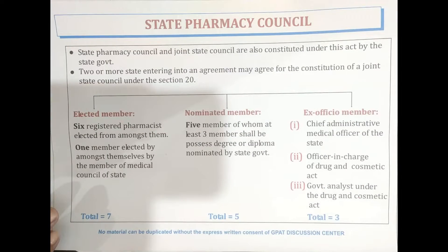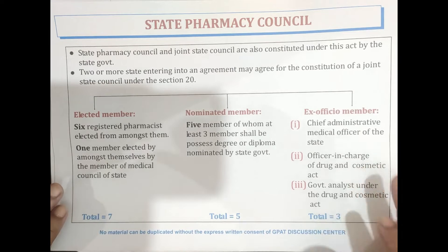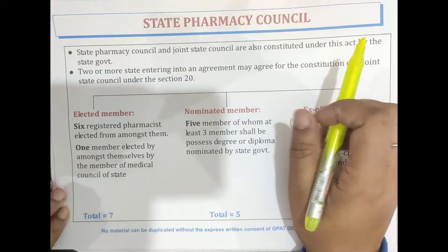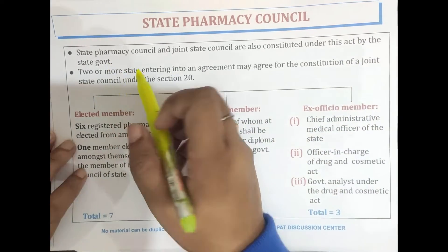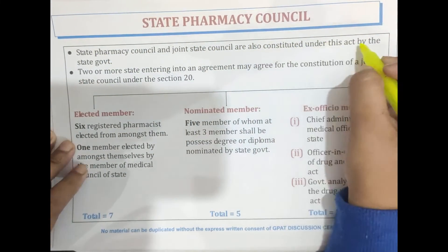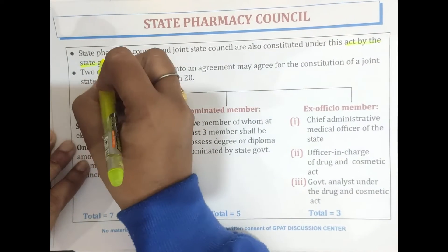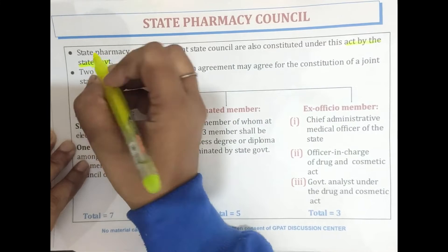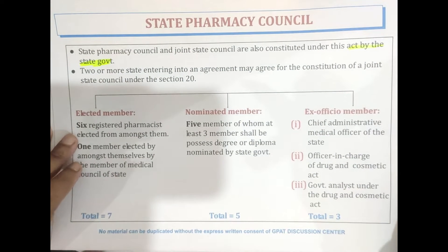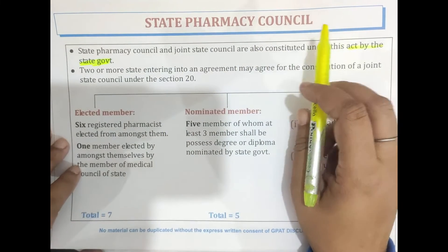Hello farmers and parents, welcome to the GDC channel. Today we are going to discuss the State Pharmacy Council and Joint State Pharmacy Council. These are also constituted under this Act by the state government. As already discussed, PCI is constituted by the central government, but a State Pharmacy Council is constituted by the state government.